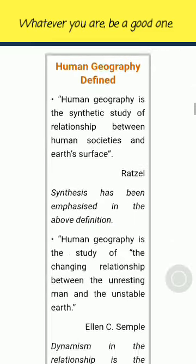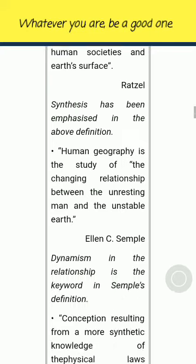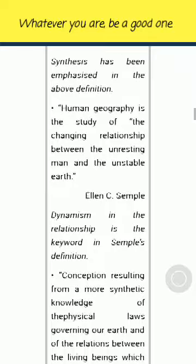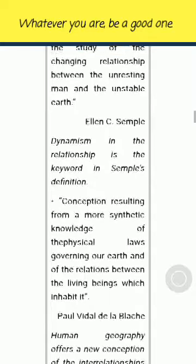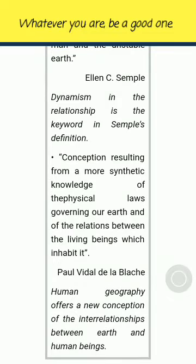Human Geography Defined. Human Geography is the synthetic study of relationship between human societies and earth's surface — Ratzel. Synthesis has been emphasized in the above definition. Human Geography is the study of the changing relationship between the unresting man and the unstable earth — Semple. Dynamism in the relationship is the keyword in Semple's definition.